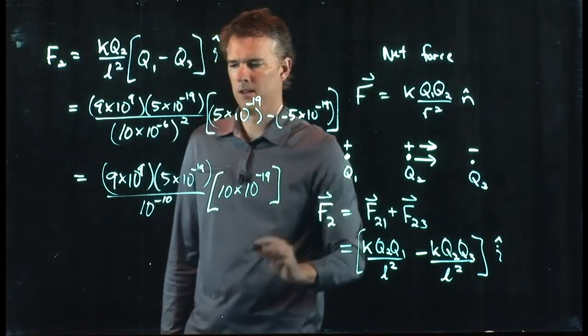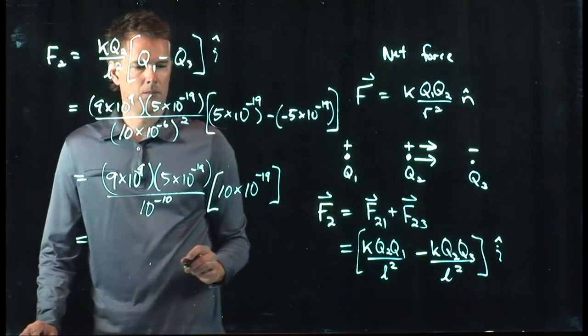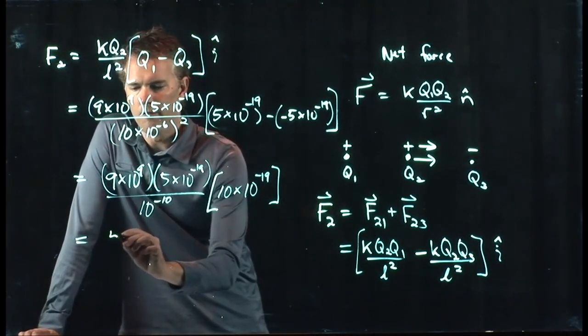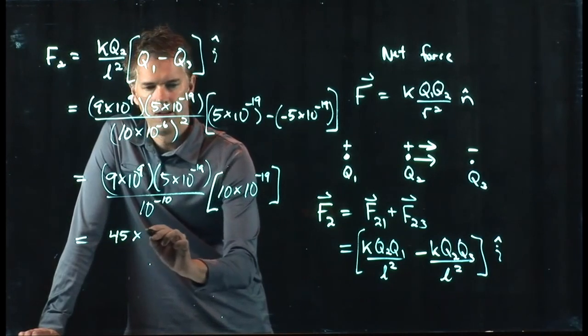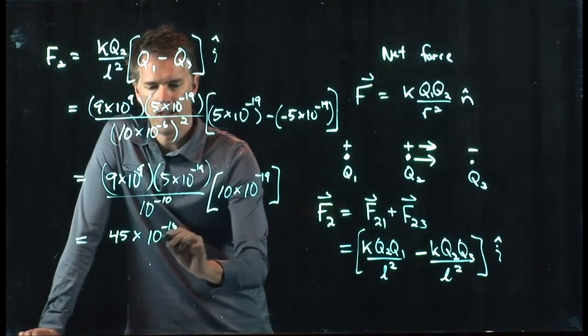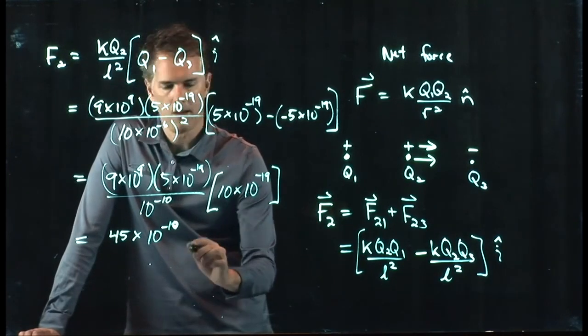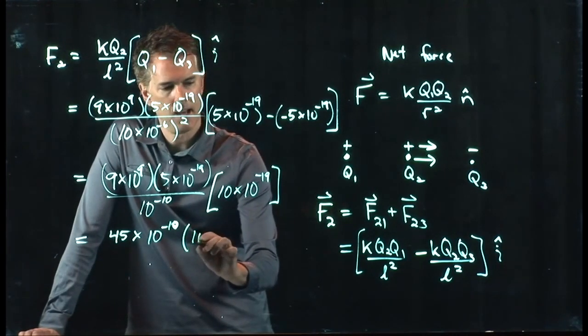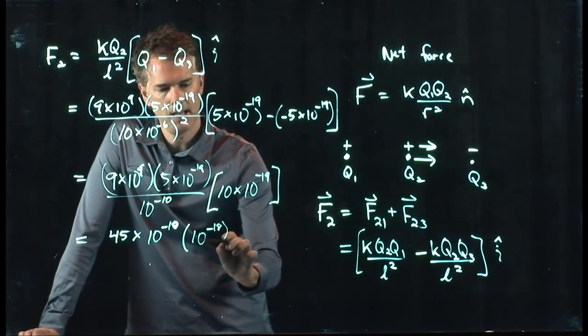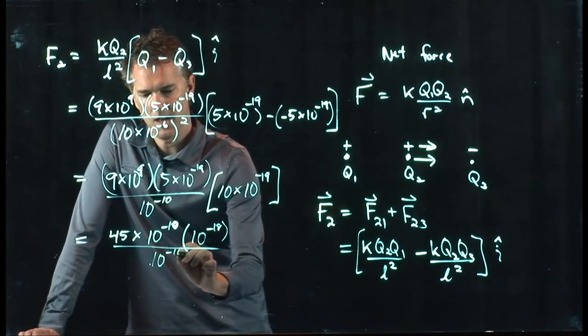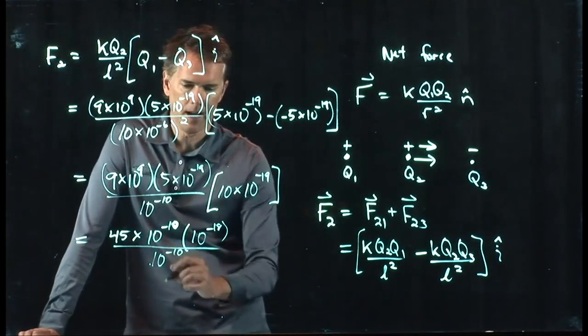And now we can do this by hand, but you can double check on your calculator if you want. We've got 45 times 10 to the minus 10, that's a 10, and then we've got 10 to the minus 18, and we're going to divide by 10 to the minus 10.